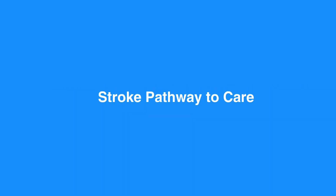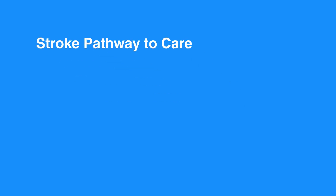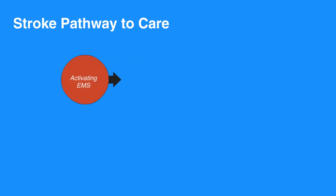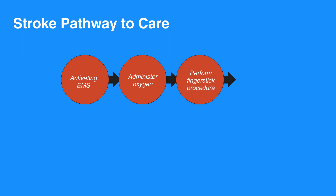To care for an individual with a stroke, proceed with this pathway. Start with activating EMS. Administer oxygen — use 100% oxygen initially and titrate as needed. Perform a finger stick procedure to check glucose, as hypoglycemia can mimic acute stroke. Check history and determine the precise time of symptom onset from the individual and witnesses.